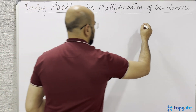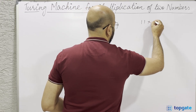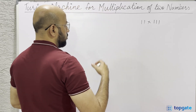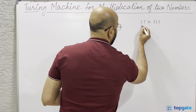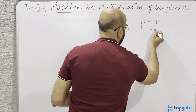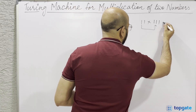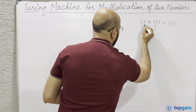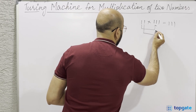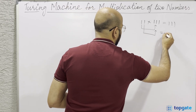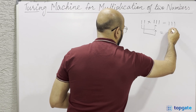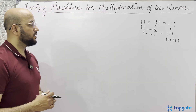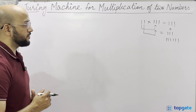Let us say we have two numbers - I will take two and multiply it with three, so the answer should be six, meaning I should have six ones. The approach I will apply: I will take the first one and multiply it with these three ones, getting three ones. Then I will read the second one, multiply it with the three ones again, and add these numbers to get six ones on the tape.